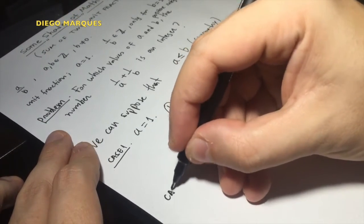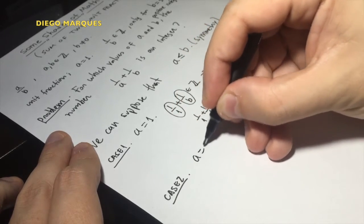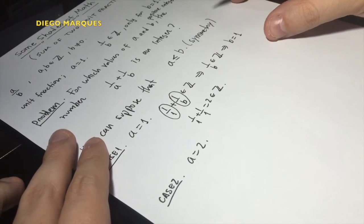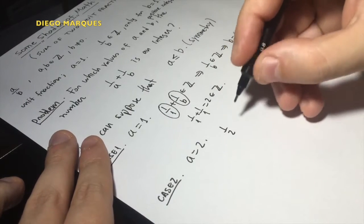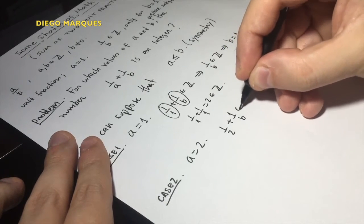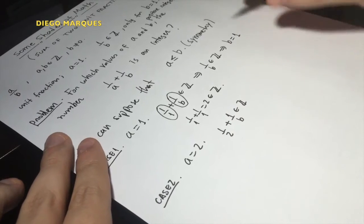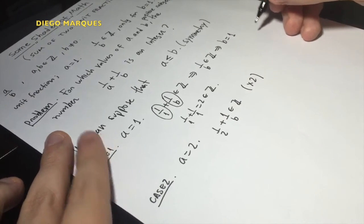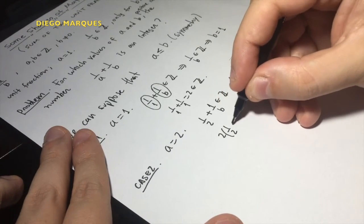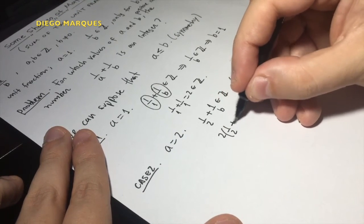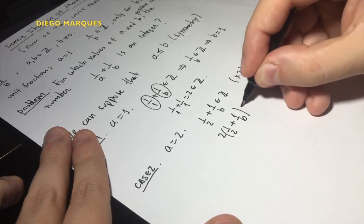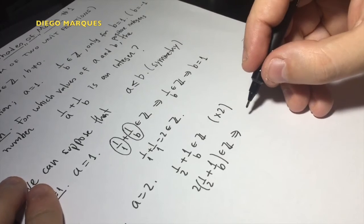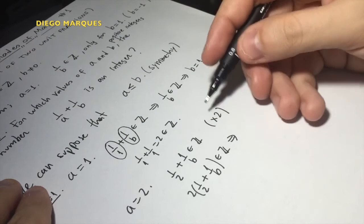Okay, case two: we consider the case when a is equal to 2. In this case we have that 1 over 2 plus 1 over b is an integer. So if I multiply this relation by 2, I have that 2 times 1 over 2 plus 1 over b must be an integer.